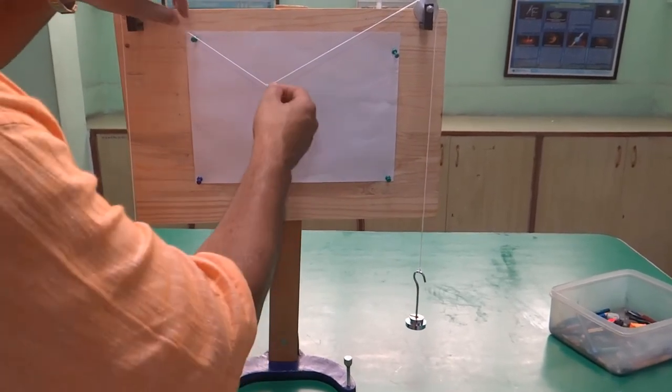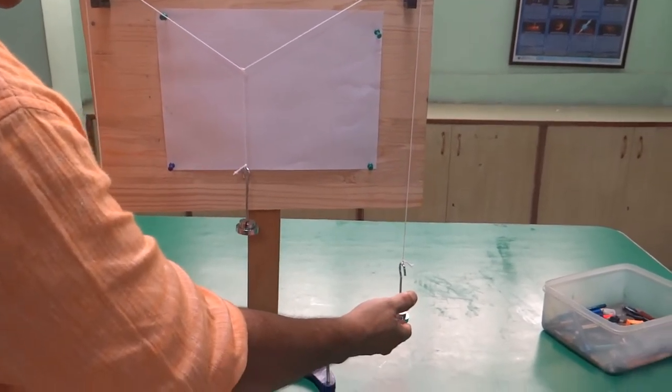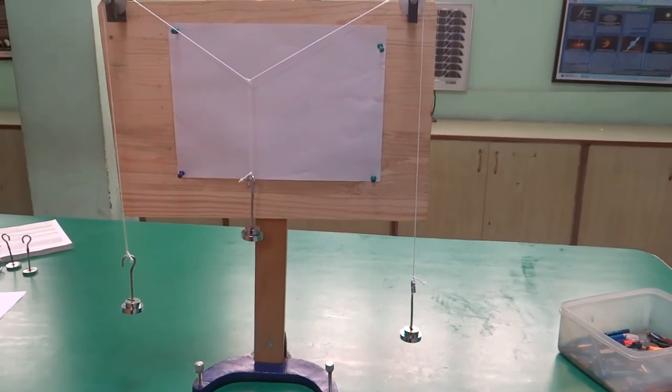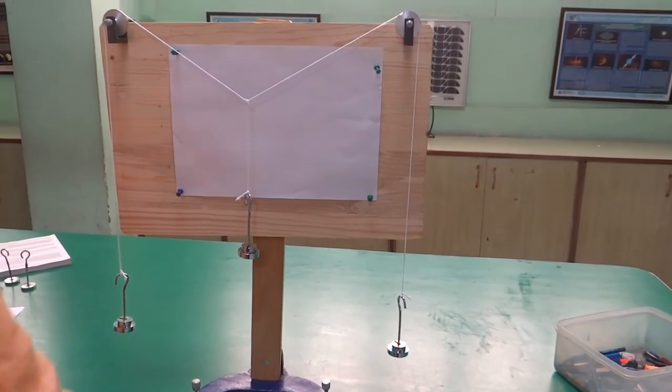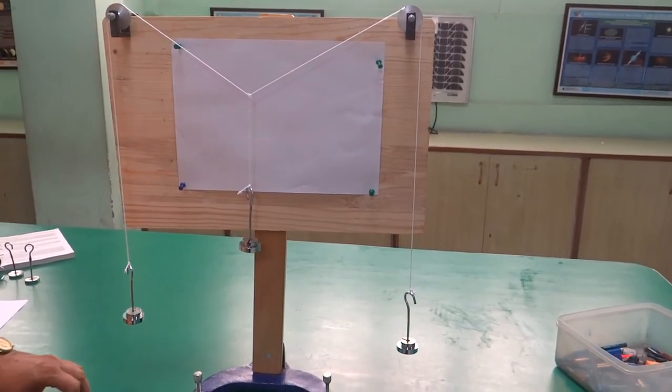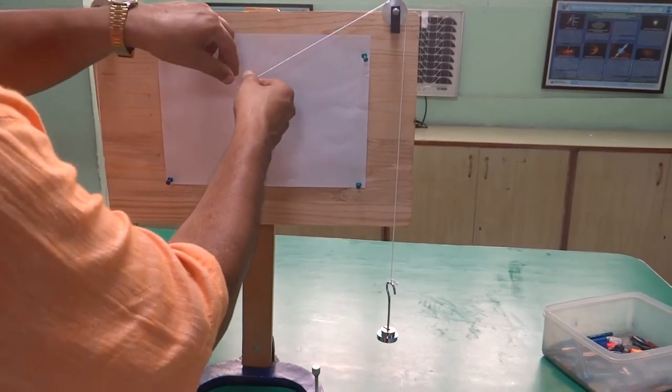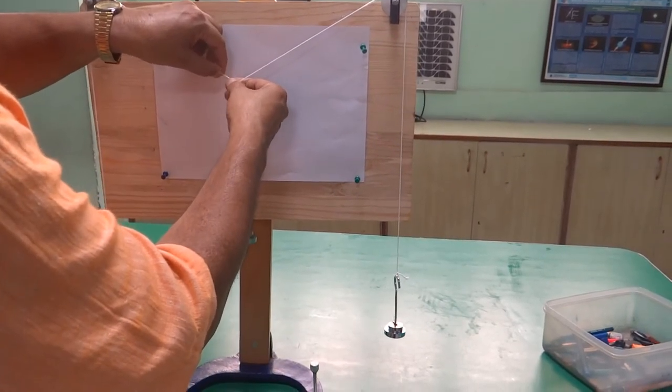What you have to do, these two weights which are suspended here, first check whether these are in the same plane or not. That you can mark with the help of scale. This is going little lower, so we shift this here.